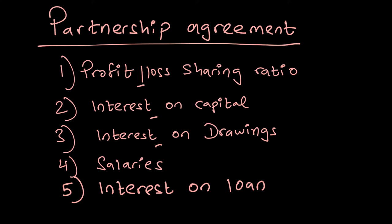Interest on drawings penalizes partners that are withdrawing more — if your drawings are high, you pay higher interest to the partnership. Interest on capital is subtracted from profit because the partnership pays it to the partners, but with interest on drawings the partners pay this amount to the partnership, so profits increase. Salaries are also included: if any partner is involved in management they are compensated for their opportunity cost and time.